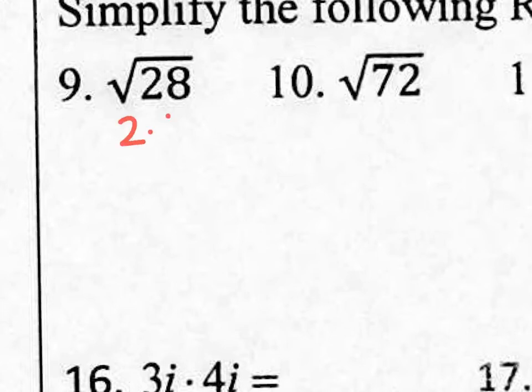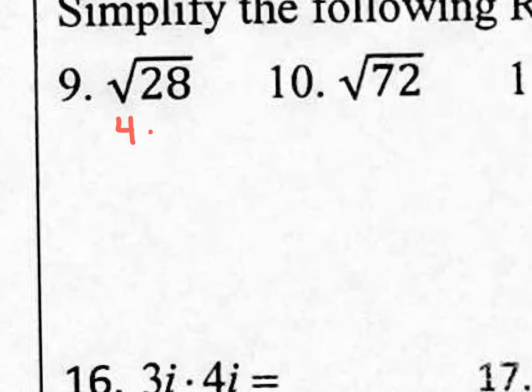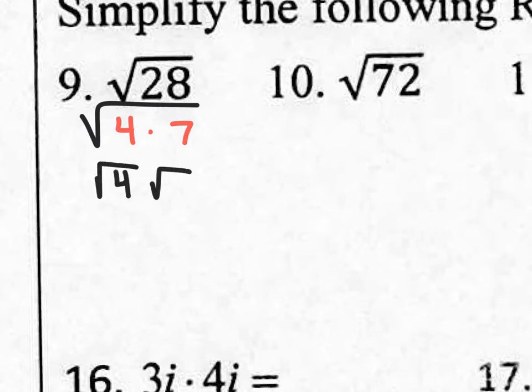If you're thinking 2 times 14, you're wrong, because 2 is not a perfect square and 14 is not a perfect square. So what times what equals 28 where you actually get a perfect square number? You could say 4 times 7 — that's a great combo. Because 4 is a perfect square number. So all we're doing is rewriting the 28 to become 4 times 7. After all, 4 times 7 is 28. Now let's split it and say the square root of 4 and the square root of 7.